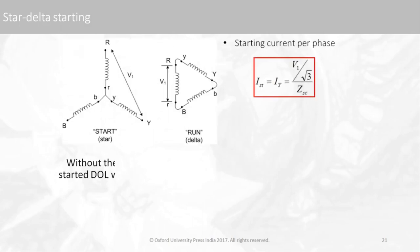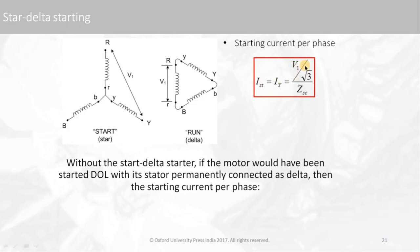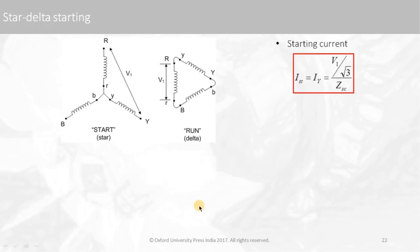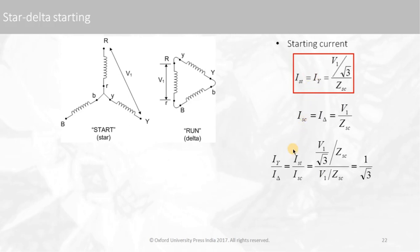In the star position, the starting current per phase is I_start = (V₁/√3) / Z_sc, since the phase voltage is V₁/√3. The short circuit current in delta position is I_sc(delta) = V₁ / Z_sc, which is similar to the DOL starting case. In the running condition we apply the full voltage V₁, and the stator voltage should not exceed V₁. The ratio of starting current to short circuit current, I_star / I_delta, is 1/√3.